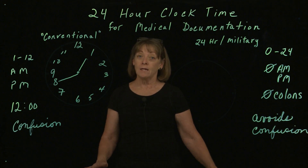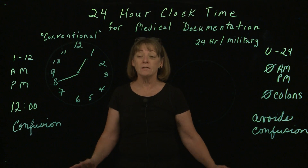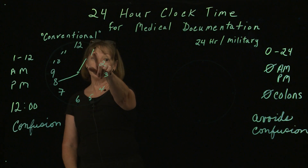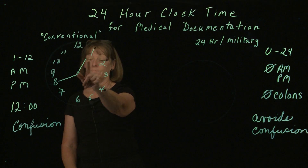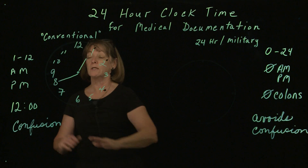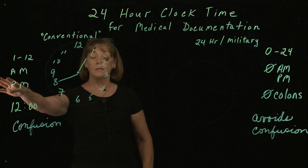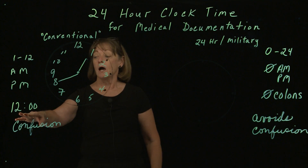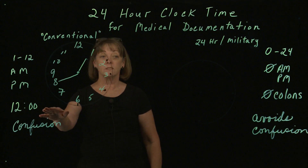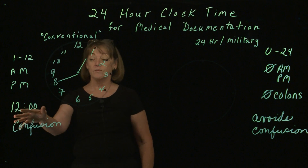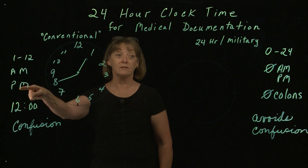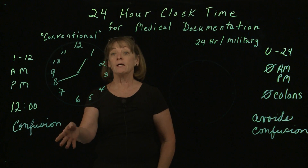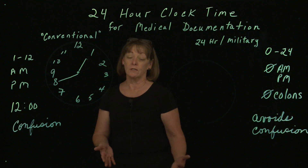AM and PM — conventional time — gets confusing. We don't know whether something is going to be AM or PM. There are only 12 numbers in that clock system and it must be labeled AM or PM. There are traditionally colons written between those numbers, between the hour and the minutes. And if we don't get all of that in there, or if we can't clearly read whether it's AM or PM, there's a lot of confusion. That kind of confusion can result in medical mistakes.